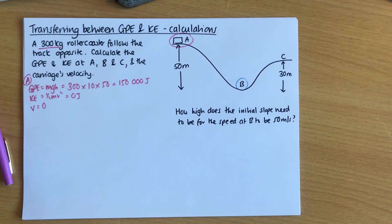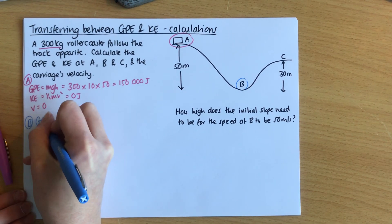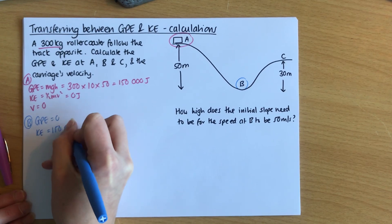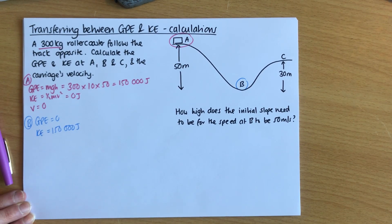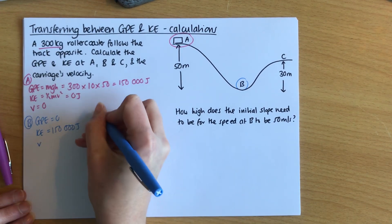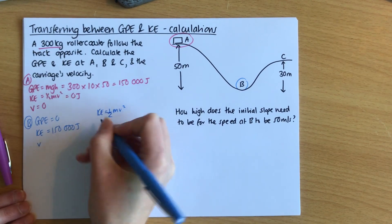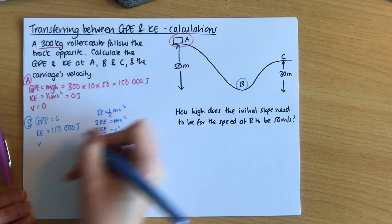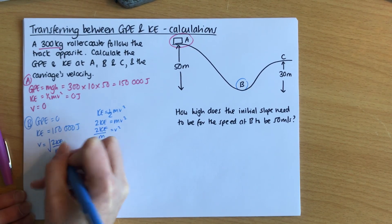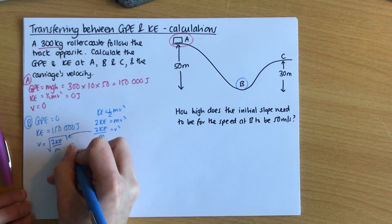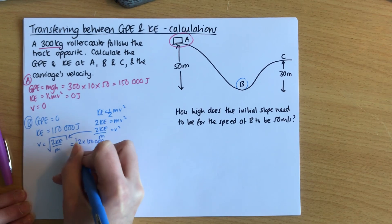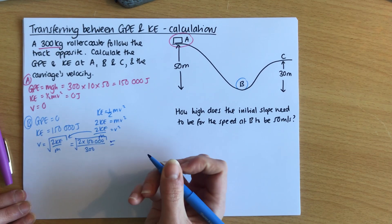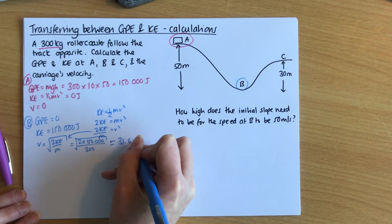At B, the GPE is going to equal zero because it has no height — H is zero here. That means the kinetic energy must equal 150,000 joules, because the total of the two always has to equal the same value. So I can now work out the speed. KE equals one-half mv², which rearranges to v equals the square root of 2KE over m. So: the square root of 2 times 150,000 divided by 300 gives a velocity of 31.6 metres per second.